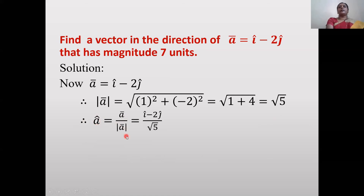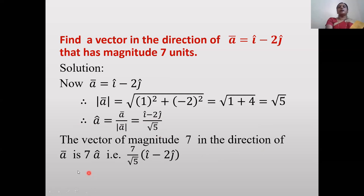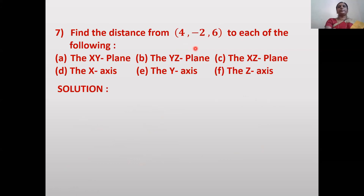The unit vector â = ā/|ā| = (i - 2j)/√5. The vector having magnitude 7 in the direction of ā is 7â = 7(i - 2j)/√5.